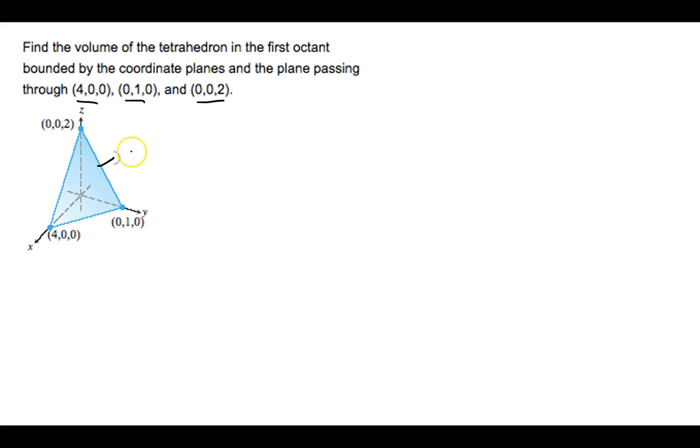What we need is the equation of this plane. In order to find the equation of a plane, there's two things that you need: a point that's on the plane and the normal vector to the plane. To get the normal vector, we're going to take two vectors that are in the plane and cross them.